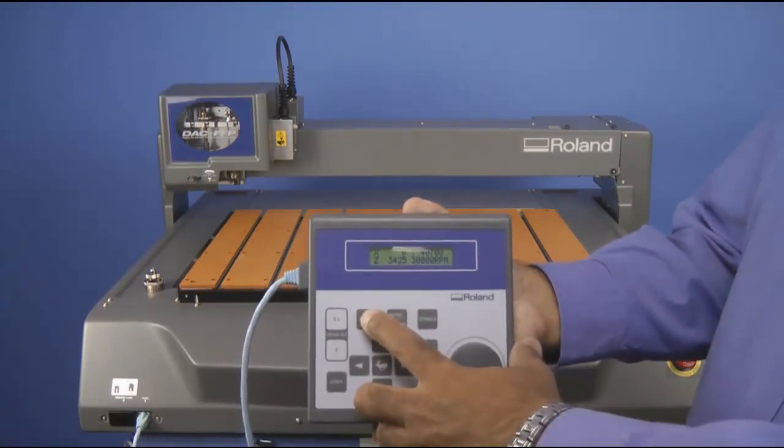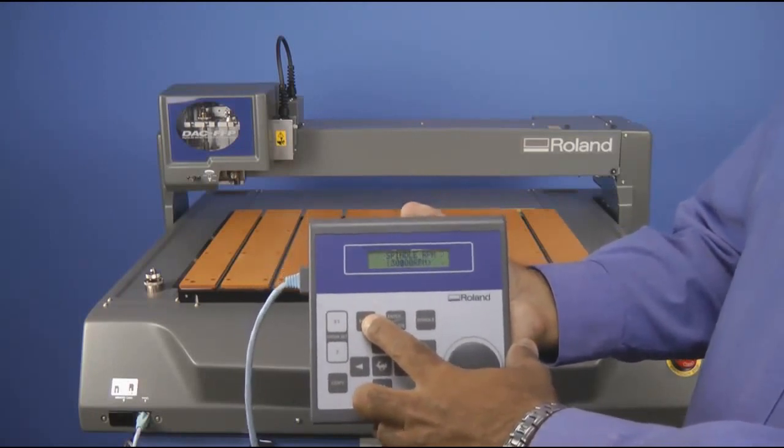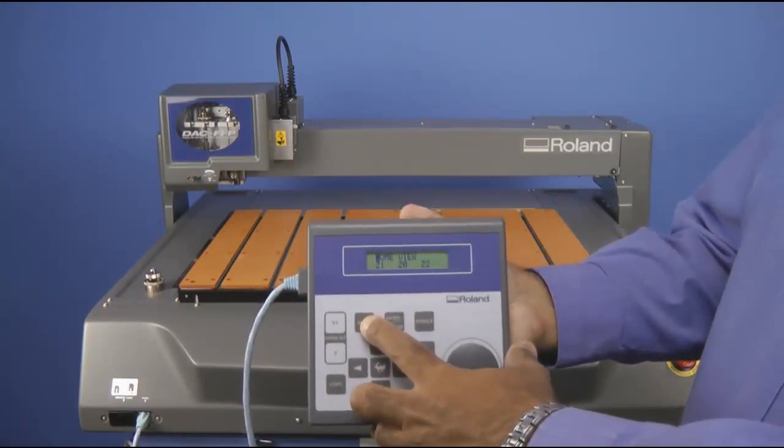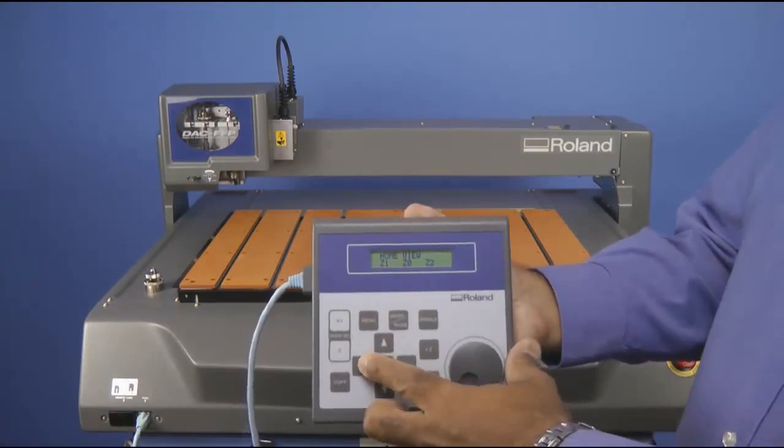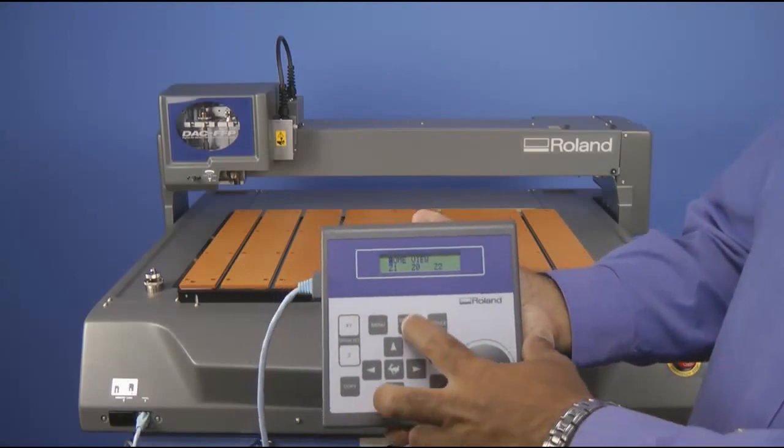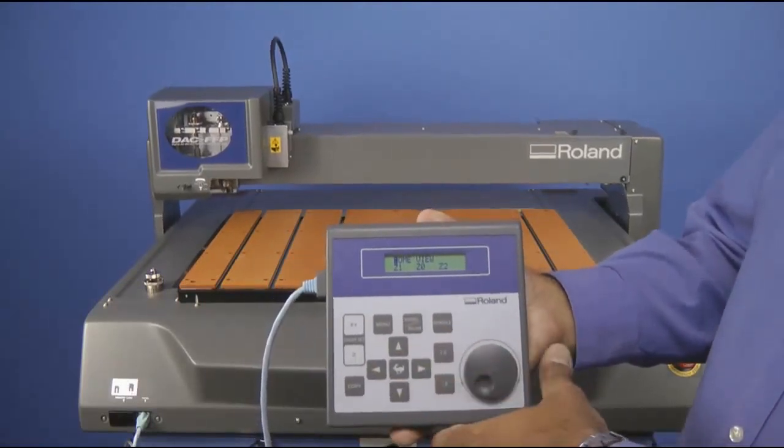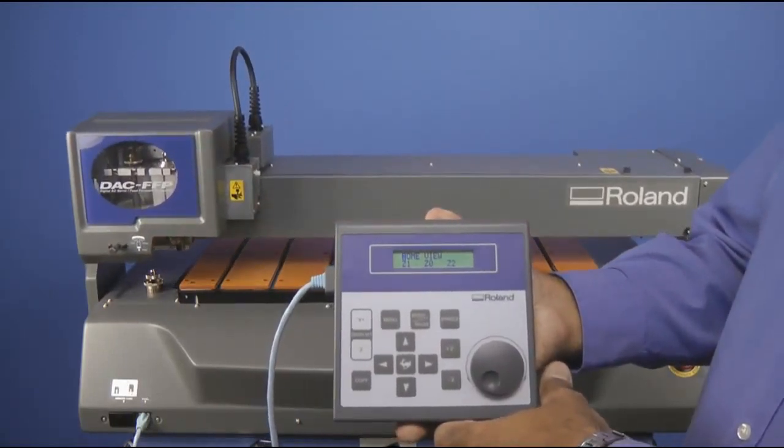Next, we want to go ahead and press the menu key until we see the home view Z0, Z1, Z2 menu. You want to make sure home is selected and press the enter key. This will move the machine to the X, Y origin position.